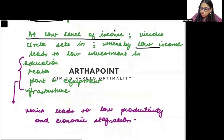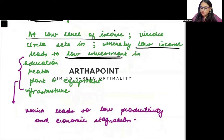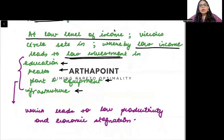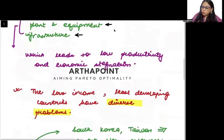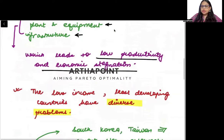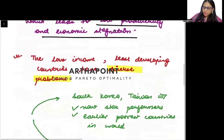When there is low income, there will be low investment in education, health, plant and equipment, and infrastructure. When there is low investment in these things, it leads to low productivity and economic stagnation.